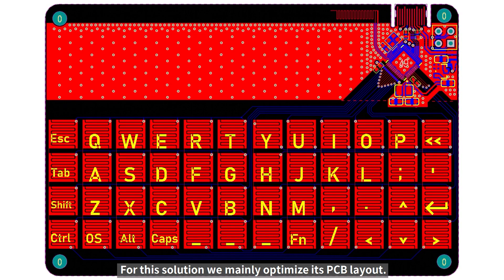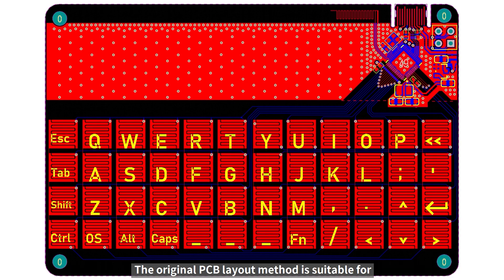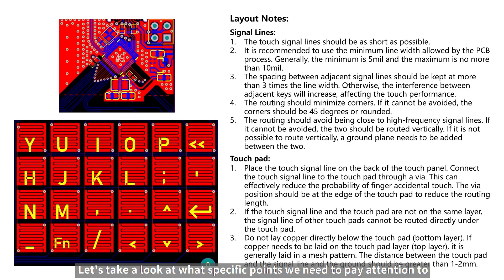For this solution, we mainly optimize its PCB layout. Because our touch key peripheral uses self-capacitance coupling detection, the original PCB layout method is suitable for mutual capacitance coupling detection. Let's take a look at what specific points we need to pay attention to when laying out the PCB.